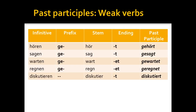As a quick review: the past participles of weak verbs are generally formed by taking the stem of the verb — for instance, 'hören,' stem 'hör' — adding a 'ge-' prefix and a '-t' or '-et' suffix, depending on the quality of the verb stem. So you get constructions like 'gehört,' 'gesagt,' or 'gewartet.' The main things to note are the 'ge-' prefix, the '-t' or '-et' suffix, and that the vowel in the stem does not change.